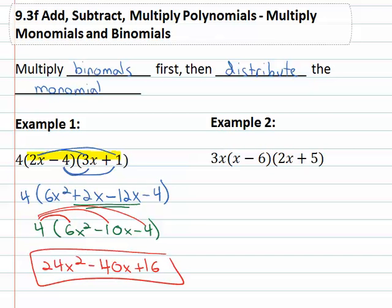And so we end up with twenty—whoops, 4 times negative 4 is negative 16, sorry. So what we end up with is 24x² - 40x - 16.